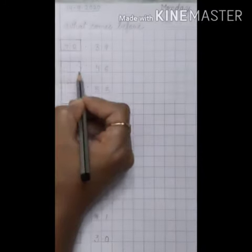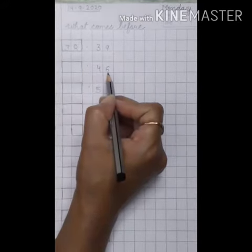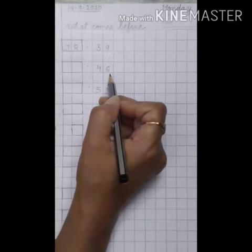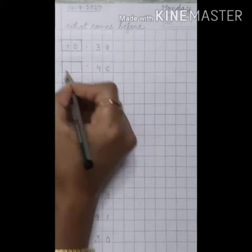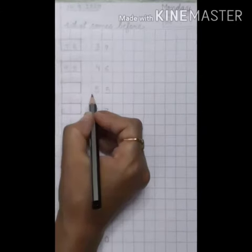Draw a box like this. Put a dot here. Write 46. What comes before 46? 45, 46. 45 comes before 46.